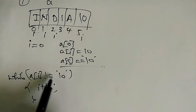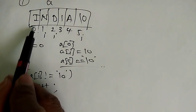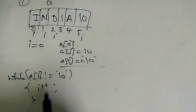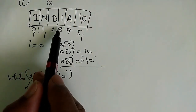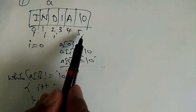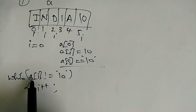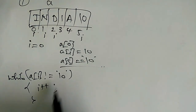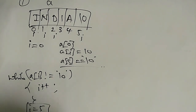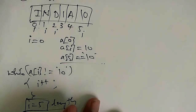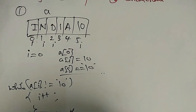While A[I] is not equal to backslash 0: A[0] is not equal to backslash 0 — true, so we increment I. We keep moving until A[5], which is backslash 0. Then the while loop exits. At that point, I equals 5, which is the length of the string. This is how we calculate the length.